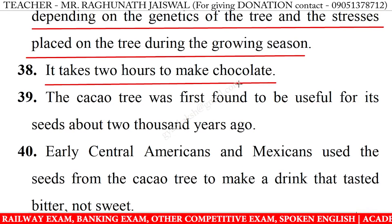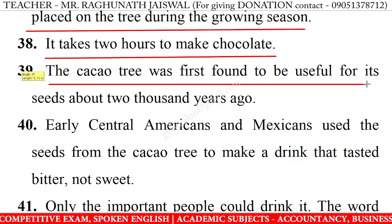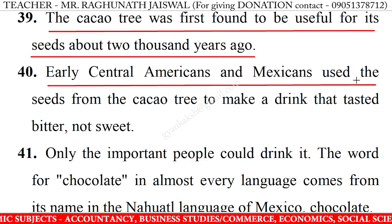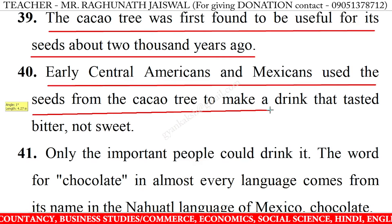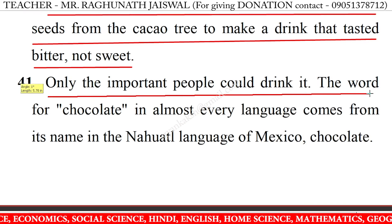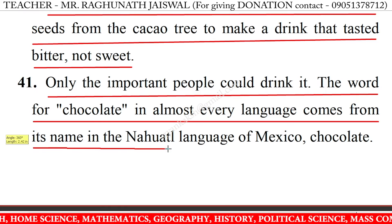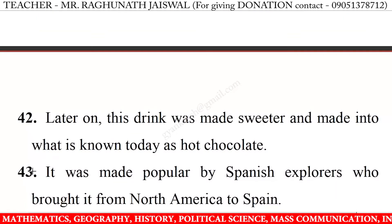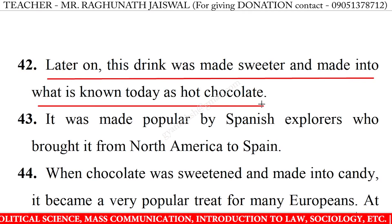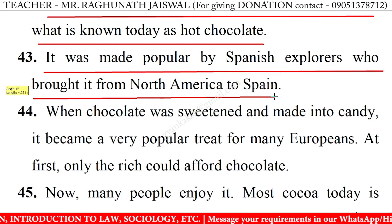It takes about two hours to make chocolate. The cacao tree was first found to be useful for its seeds about 2000 years ago. Early Central Americans and Mexicans used the seeds from the cacao tree to make a drink that tasted bitter, not sweet. Only important people could drink it. The word for chocolate in almost every language comes from its name in the Nahuatl language of Mexico. Later on, this drink was made sweeter and made into what is known today as hot chocolate.